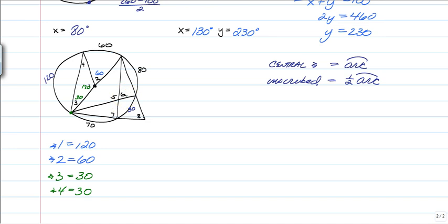5 and 6, you can see are interior angles. Now you don't have to find both. You can just find one of them. So we see that angle 6 is going to be interior of this 80 and 70 degree arcs. So we would just add 70 and 80 and get 150, divide that by 2, and we would get angle 6 is going to be equal to 75.